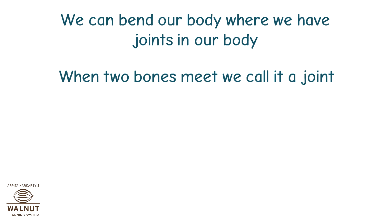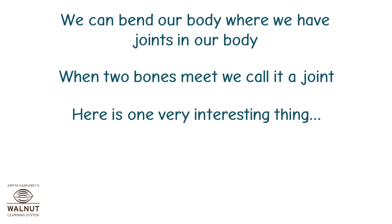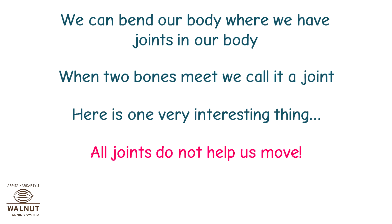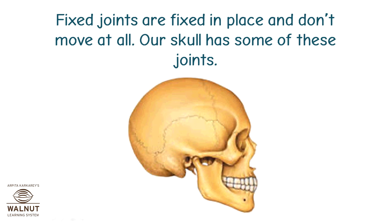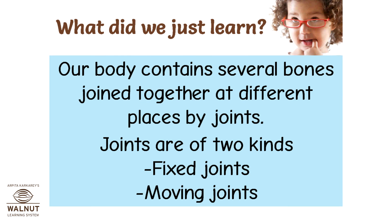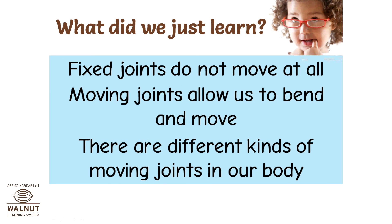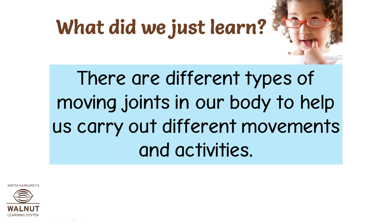When two bones meet, we call it a joint. Here is one very interesting thing: all joints do not help us move. Fixed joints are fixed in place and don't move at all — our skull has some of these joints. Joints are of two kinds: fixed joints and moving joints. Fixed joints do not move at all. Moving joints allow us to bend and move, and there are different kinds of moving joints in our body to help us carry out different movements and activities.